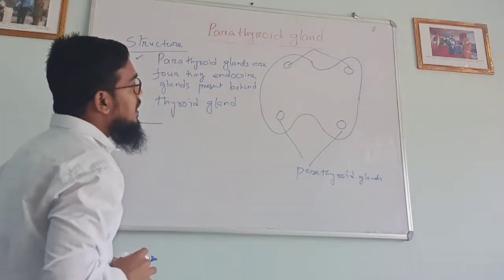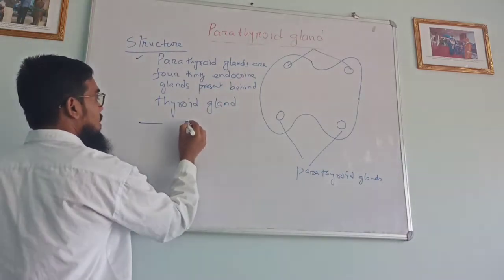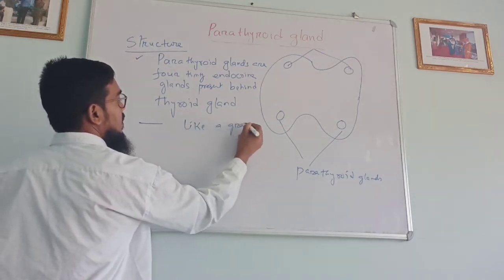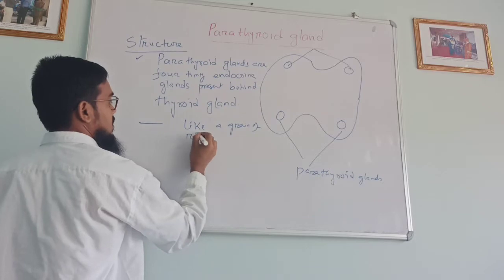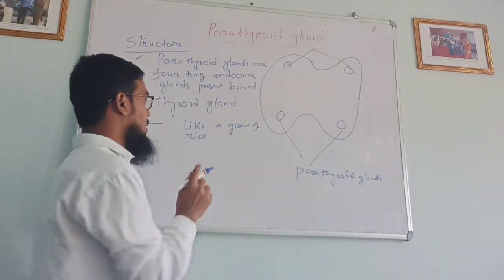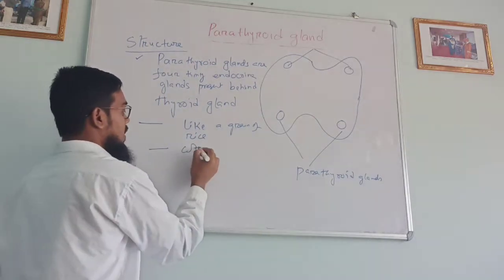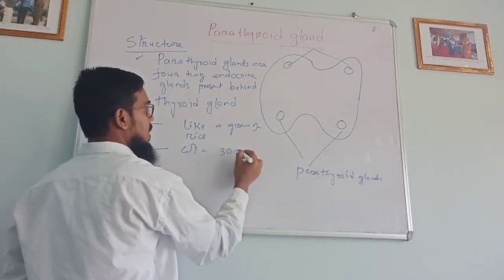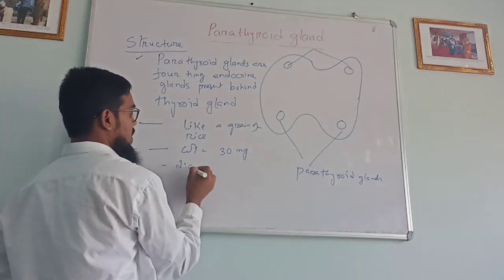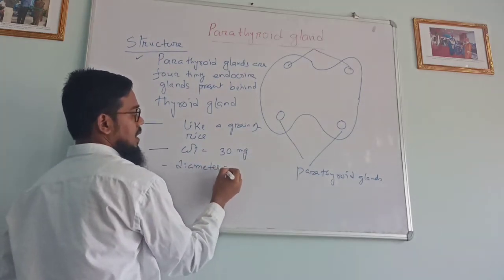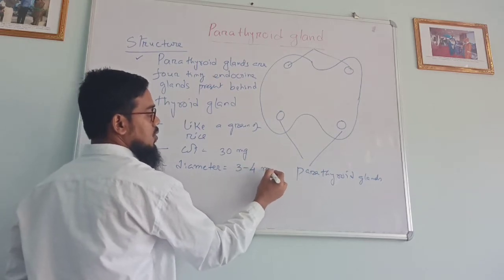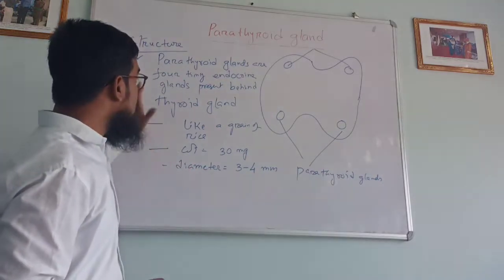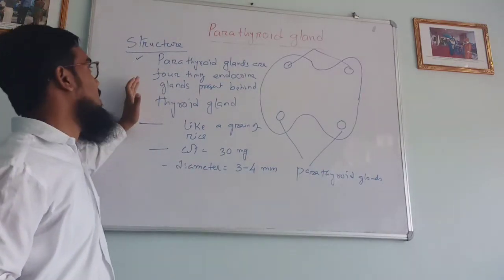These parathyroid glands are very small, like a grain of rice. The weight of a parathyroid gland is very less — it is around 30 mg — and the diameter of a parathyroid gland is 3 to 4 mm, a very small diameter. So this is about the basic things about parathyroid gland.